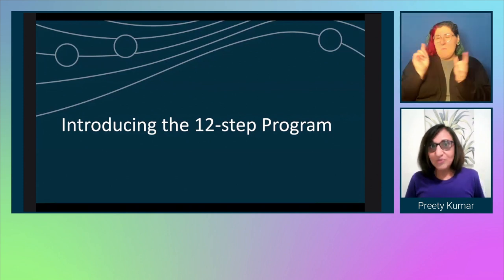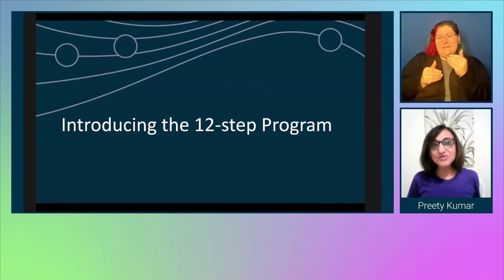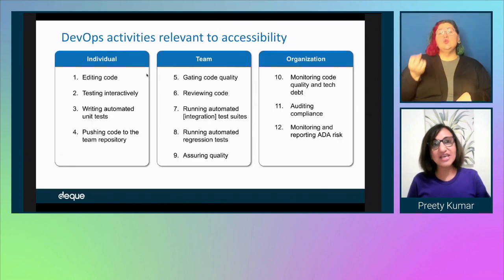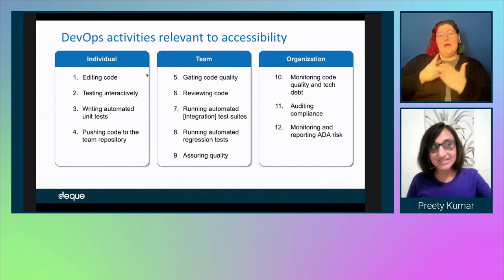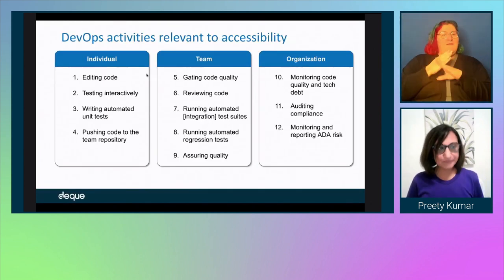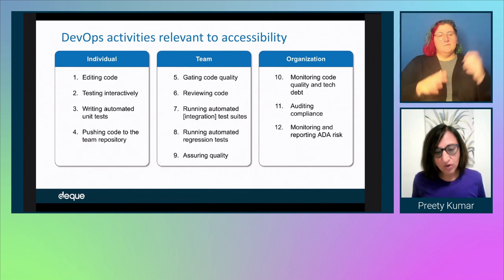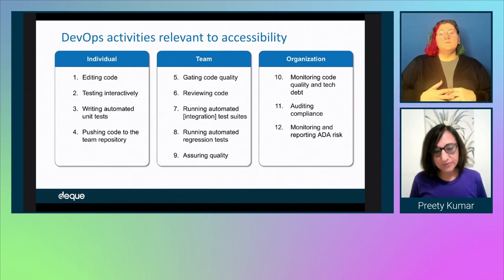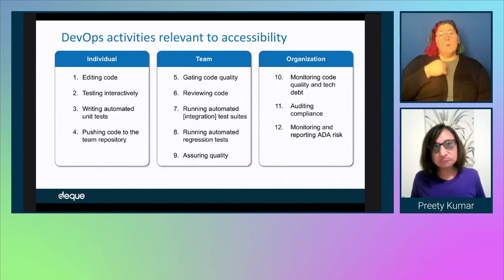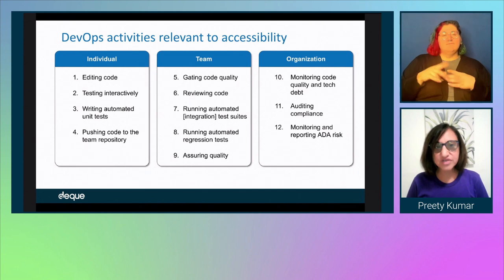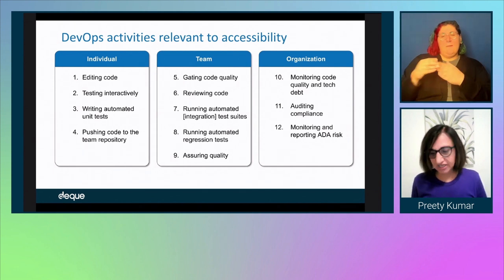We're going to introduce a 12-step program on how to prevent accessibility defects. When we think of agile development, we think of really three buckets.